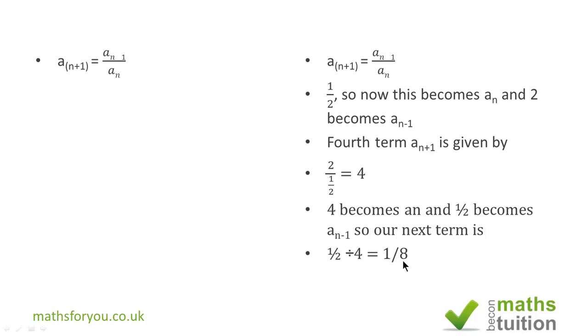Next time around, a sub n minus 1 is 4 and a sub n is 1/8. If we divide 4 by 1/8 we get 32.